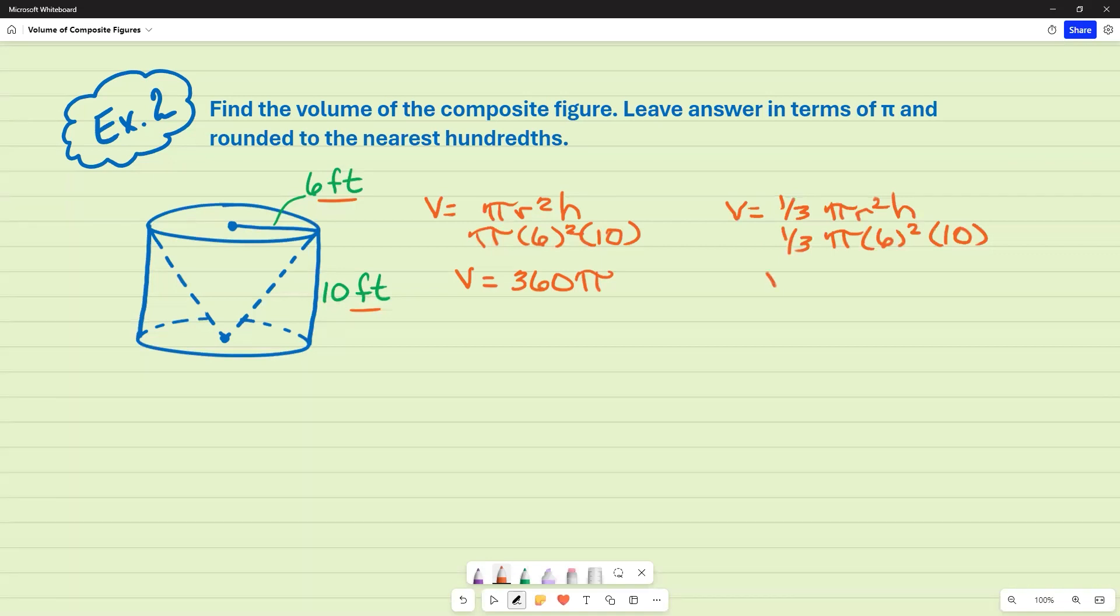And like I said, I'm taking 360 pi, which I got from the cylinder, and I'm going to divide it by three. One third of 360 pi is going to be 120 pi.